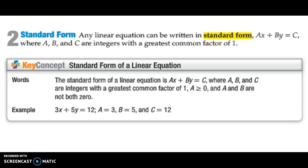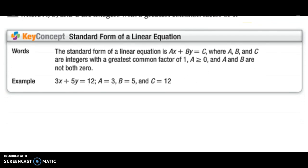We can write linear equations in standard form. Standard form is always written of this form: Ax plus By equals C, where A, B, and C are all integers, meaning positive or negative whole numbers, with the greatest common factor being 1. A has to be greater than or equal to 0, meaning I cannot have a negative A. If A is negative, we're going to have to do something to make it not negative. Here's an example: 3x plus 5y equals 12. So 3 is my A, 5 is my B, and 12 is my C.